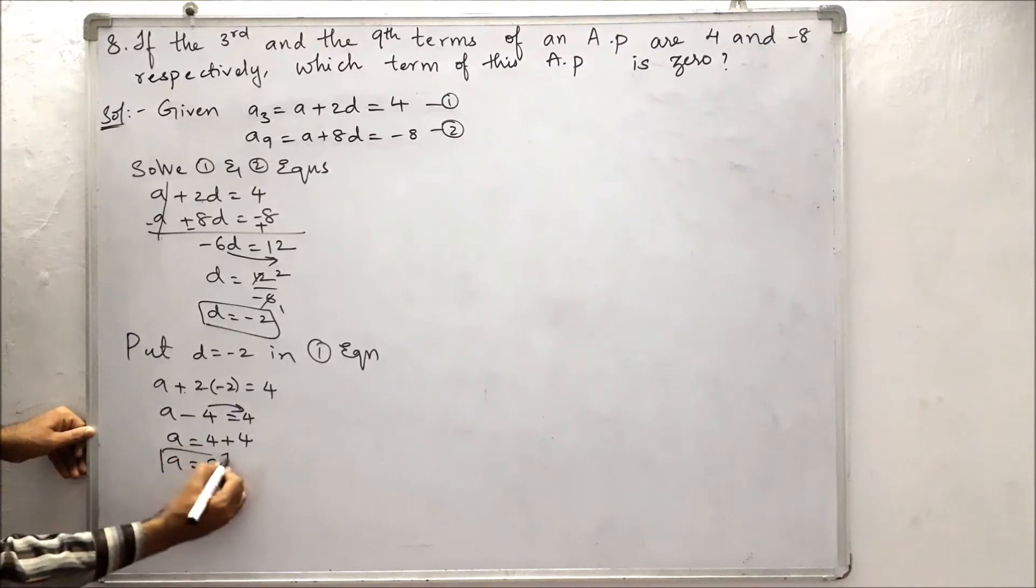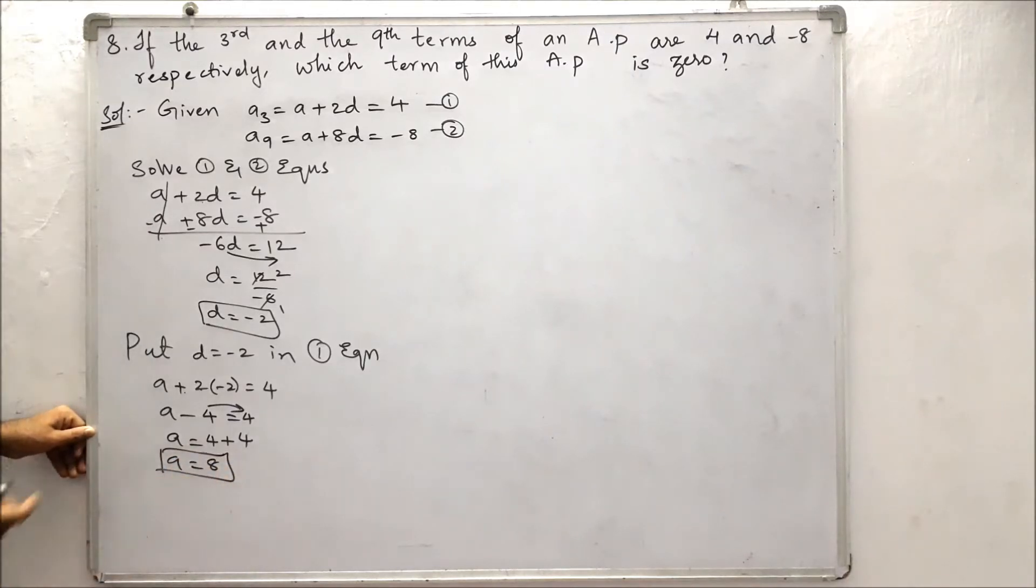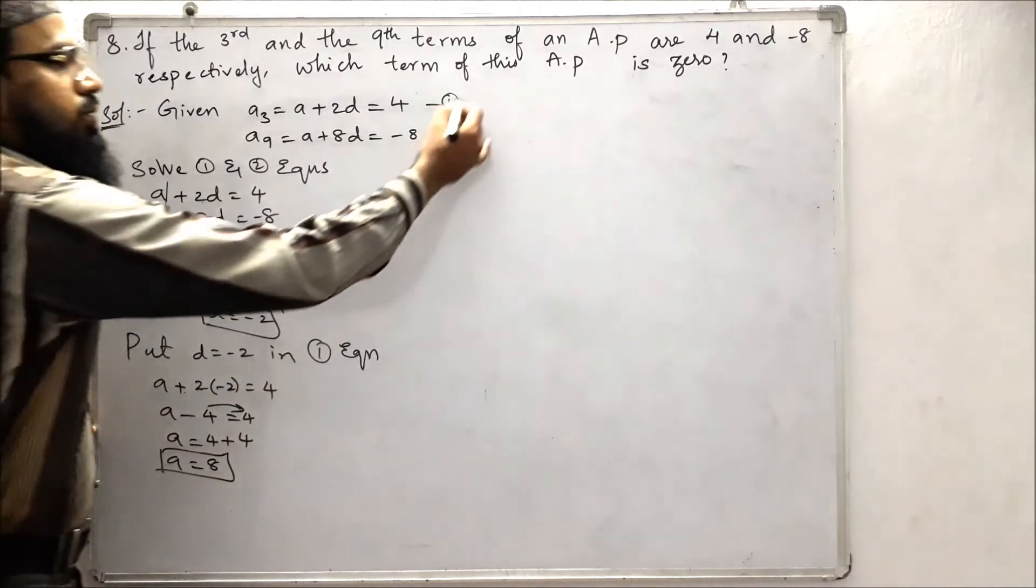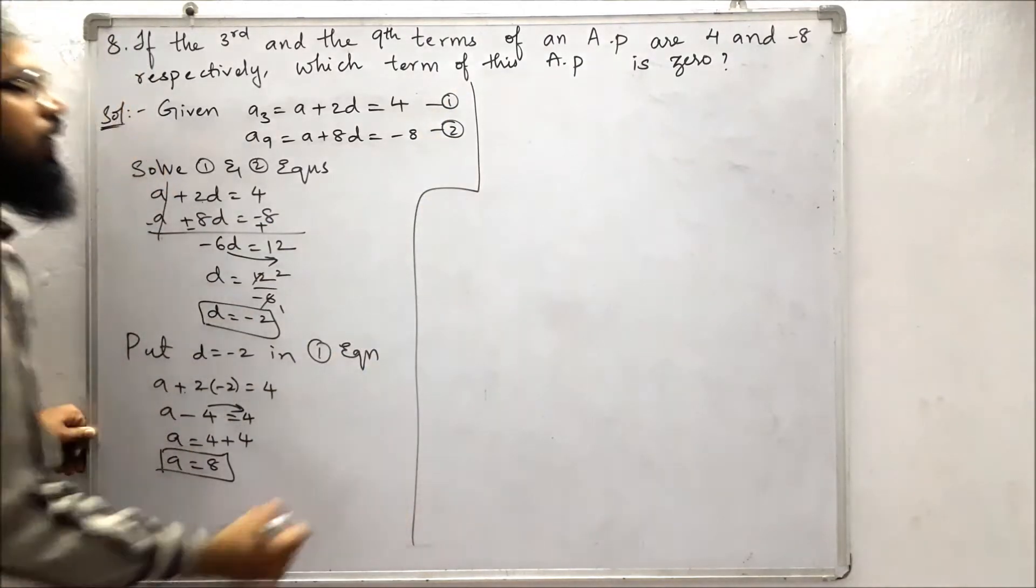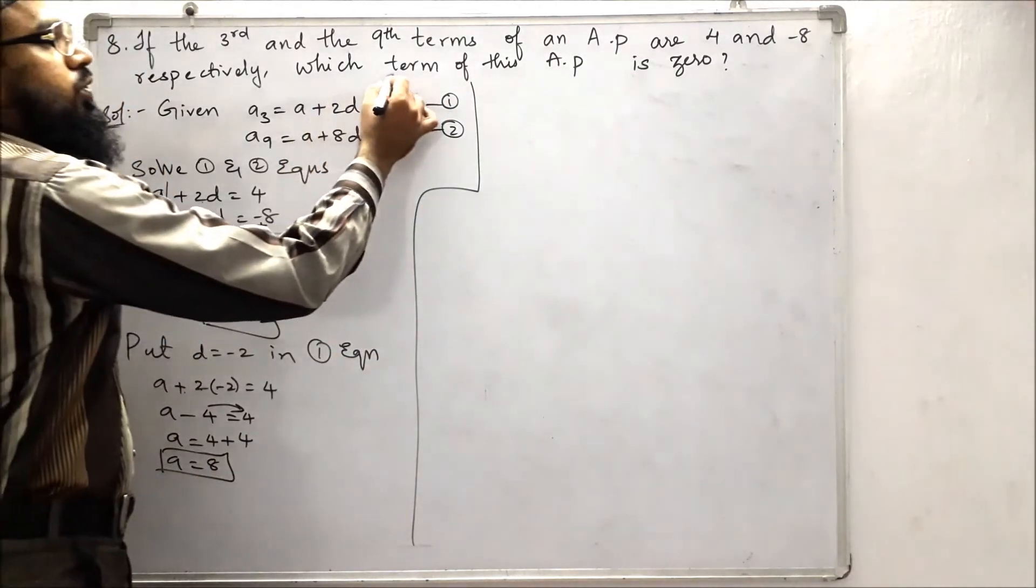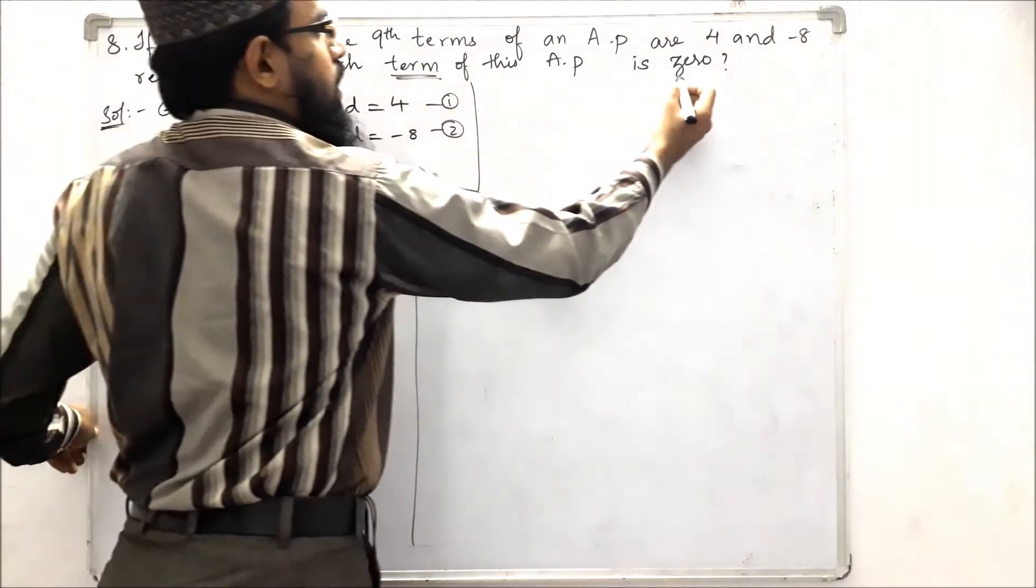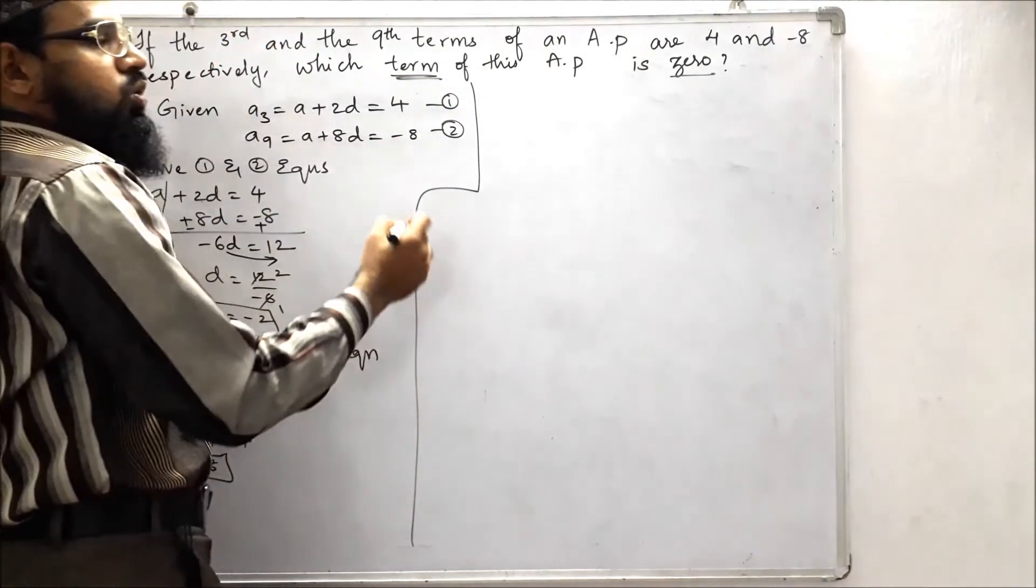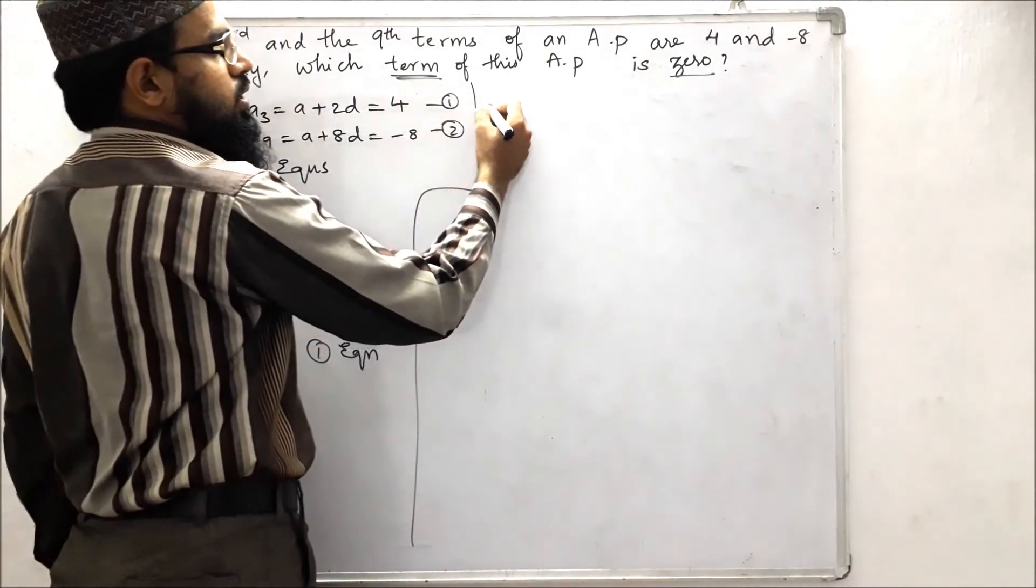A is equals to 4 plus 4, that is 8. Now we have the two values, a and d. Next we have to find the term which is having the value 0. We don't know the term, so let us take the term as n.